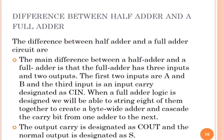The main difference between a half adder and a full adder is that the full adder has three inputs and two outputs. The first two inputs are A and B, and the third input is an input carry designated as carry-in.